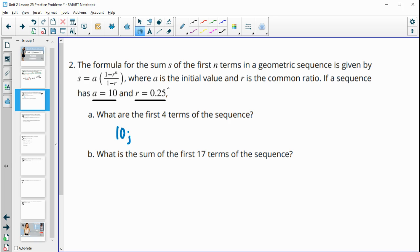Then we would take 10 times 0.25 to get our second term, which would be 2.5. Then we'll take 2.5 and multiply it by 0.25 again. And so that's going to be 0.625, and then we'll multiply 0.625 times 0.25 again, and we'll get 0.1562.5.